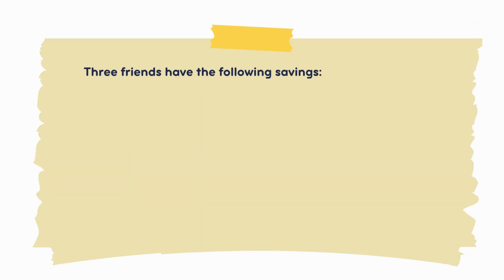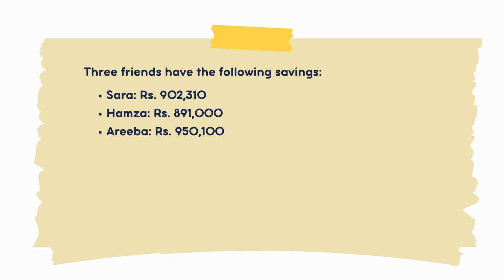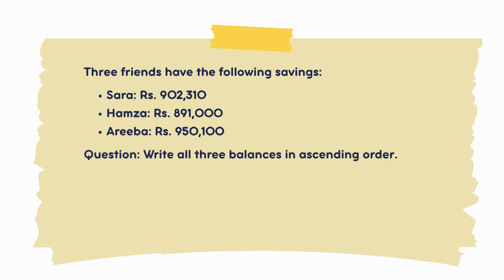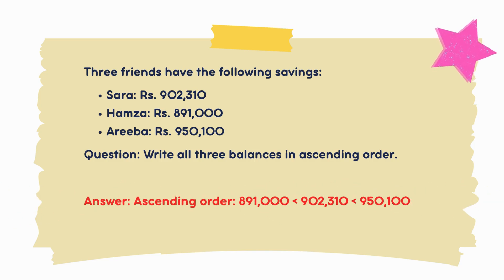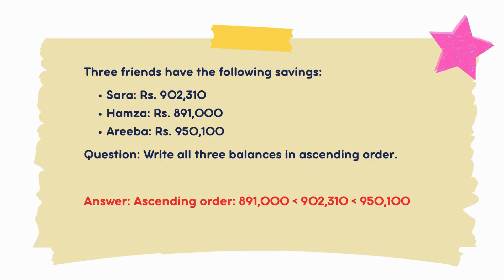Three friends have the following savings: Sarah — rupees 902,310,000; Hamza — rupees 891,000; Ariba — rupees 950,100,000. Question: write all three balances in ascending order. Answer — ascending order: rupees 891,000 less than rupees 902,310 less than rupees 950,100,000.